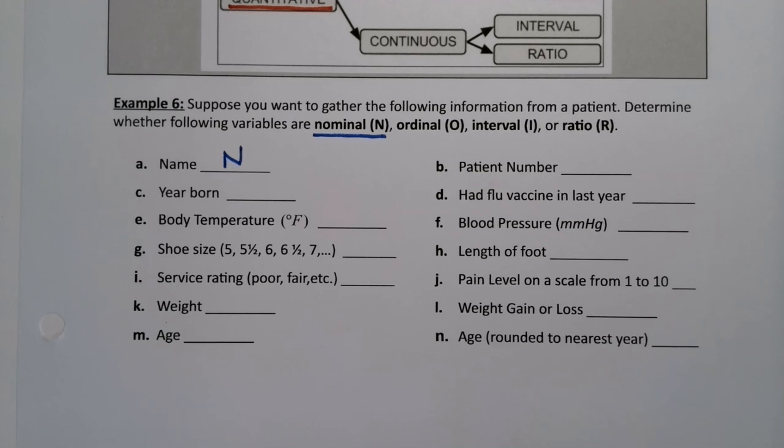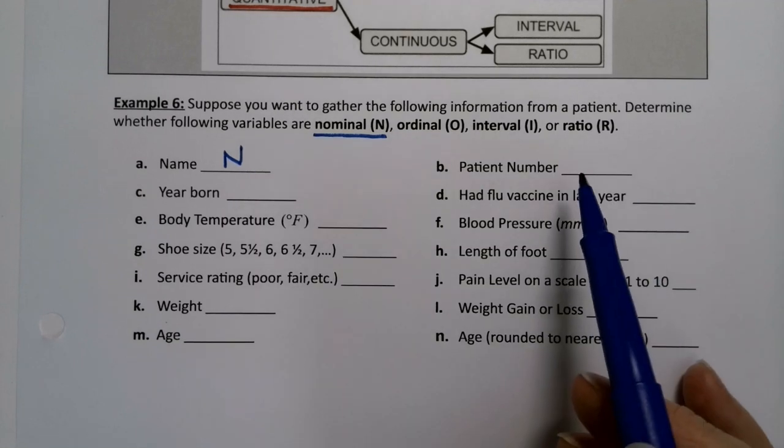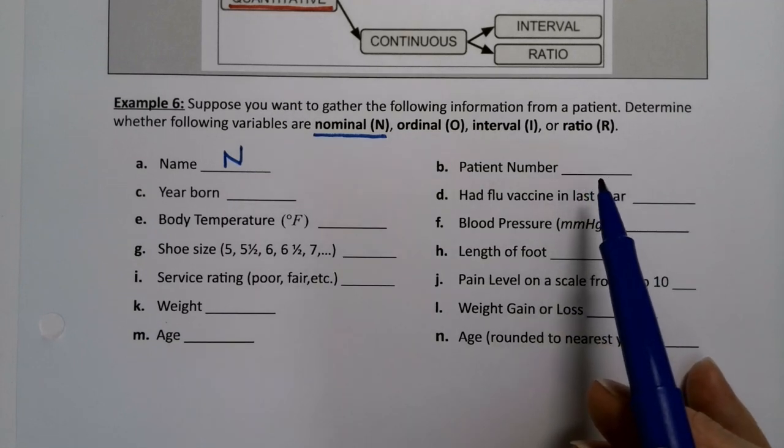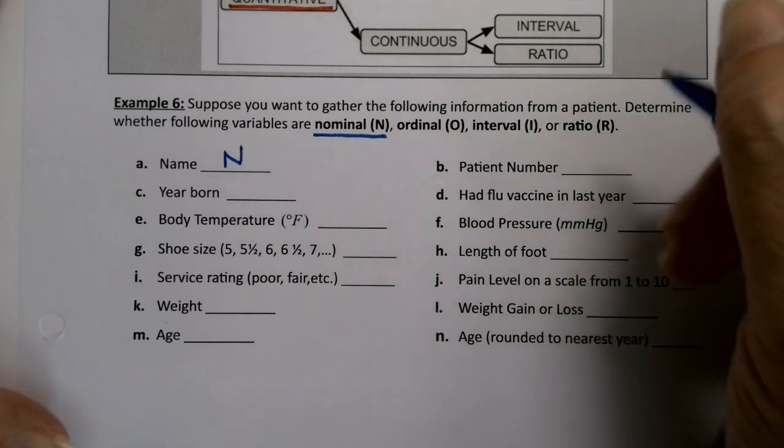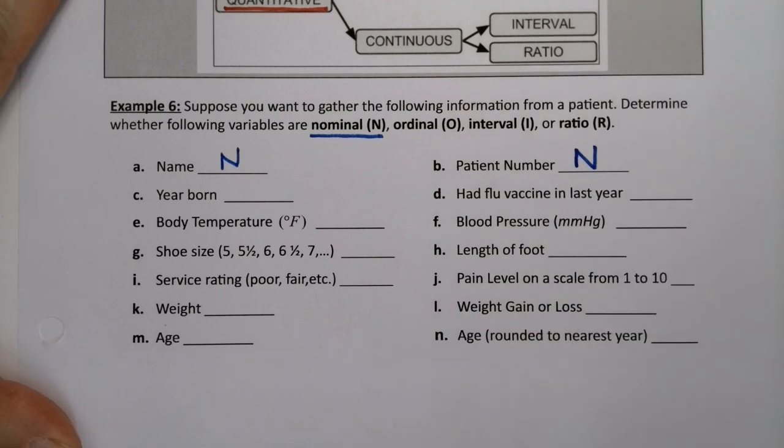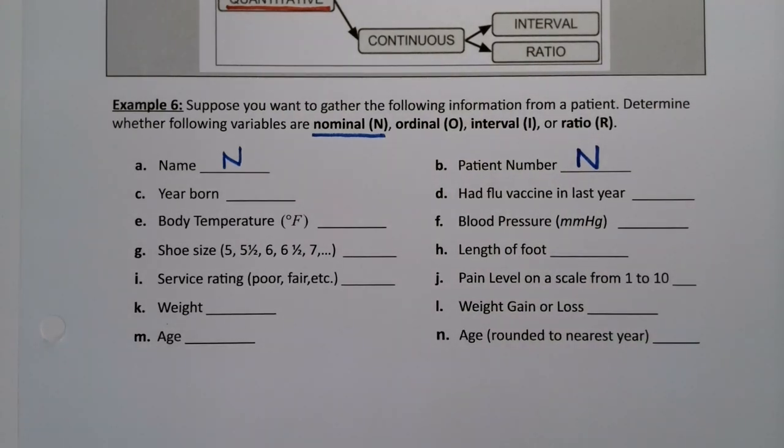Now, patient number is a little bit of a trick because you're thinking, oh, your number is 326. But that 326 does not have an order to it. It's not like patient 326 is better than patient 327. It's just the number they were assigned. It's like social security number. So this is actually N. Even though it's a number, it's nominal. You can't really do anything with it other than put them in an order. And by that, I mean not a ranked order. I mean numerical order that doesn't mean anything.